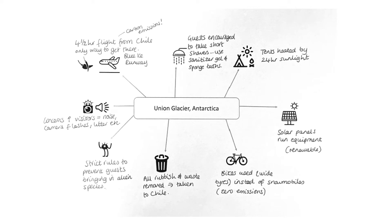The example of a sustainable scheme in a polar region is Union Glacier in Antarctica. Sustainable measures include tents heated by sunlight — the camp only opens in summer when there are 24 hours of daylight. Solar panels run all equipment; bikes are used instead of snowmobiles for zero emissions. Strict rules require checking boots for seeds or alien species. All rubbish and waste is removed and taken back to Chile. Short showers and sponge baths reduce water use. However, it requires a four-and-a-half-hour flight from Chile, landing on the blue ice runway, which creates carbon emissions — so it's not completely sustainable.